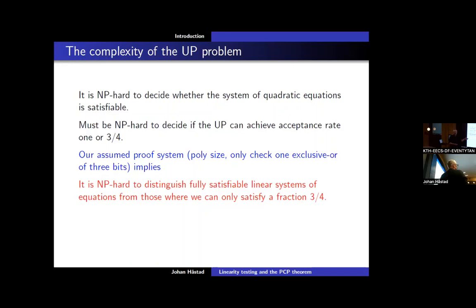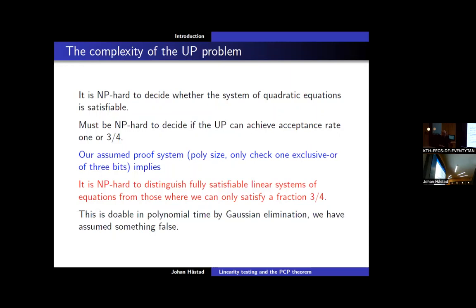So something is wrong — we assumed too much. There isn't such a proof system as the one I described. We need to make it almost as good a proof system as the one we had, and then we'll get an almost as good conclusion — which this time would be true instead of false.